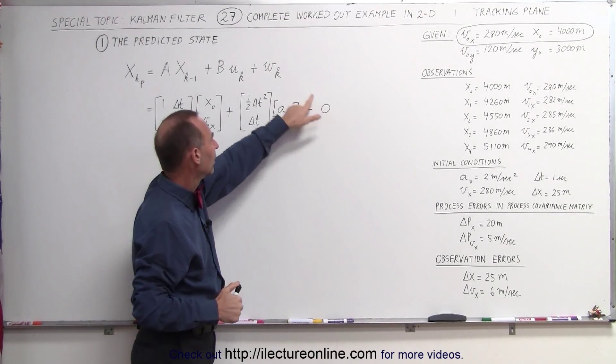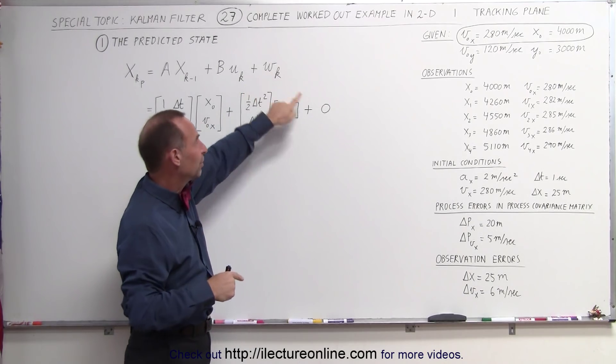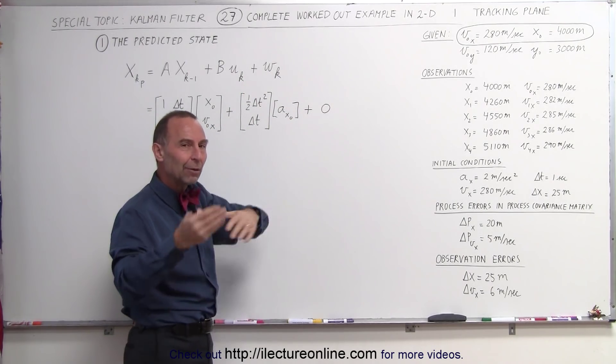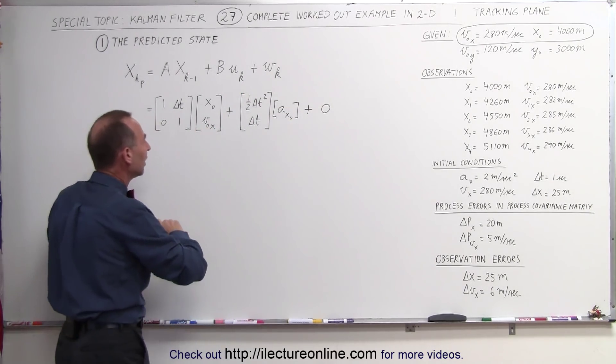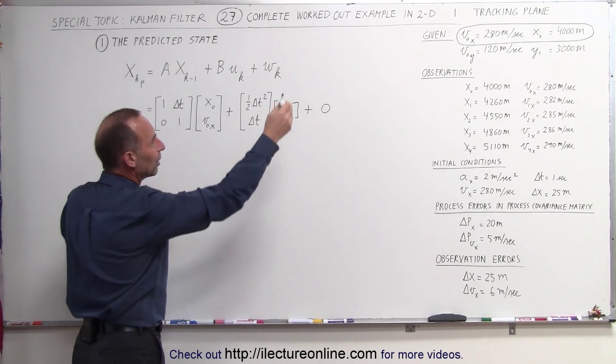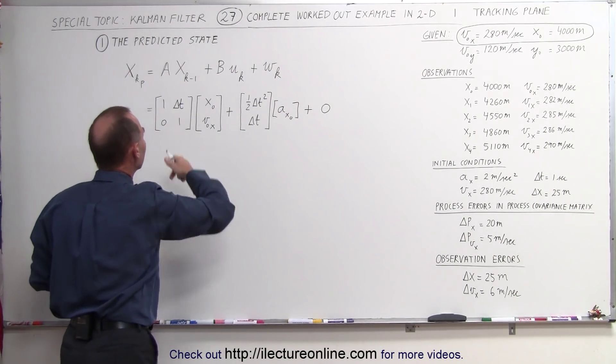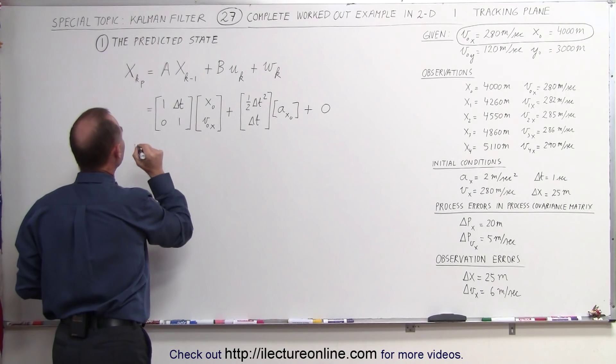Remember we're going to let the error in this process be zero for now to make it simpler. Later on we'll do an example where we don't have that zero. Now let's go ahead and use the numbers that we have here to calculate the new predicted state.